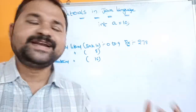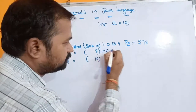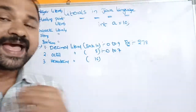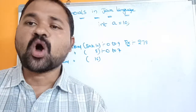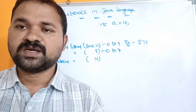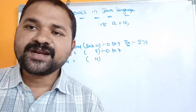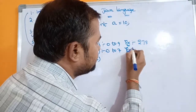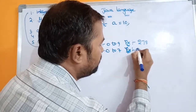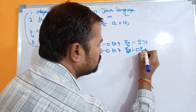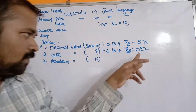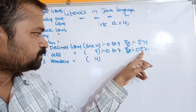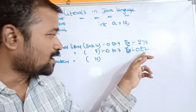The second type is octal literal. It allows digits from 0 to 7, and an octal literal always begins with 0. For example, 0227 is an octal literal — it begins with 0 and uses digits from 0 to 7.